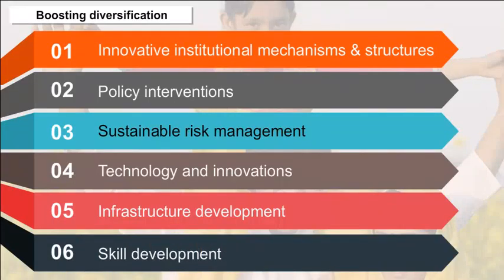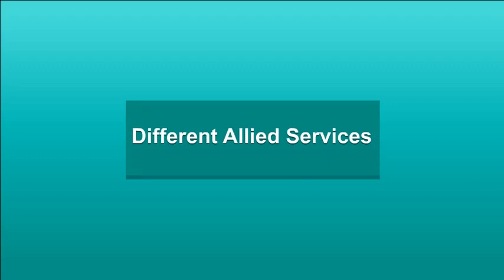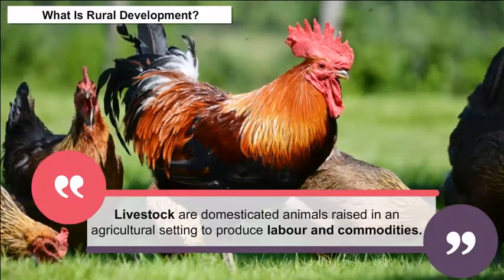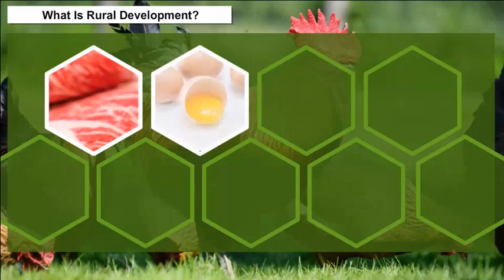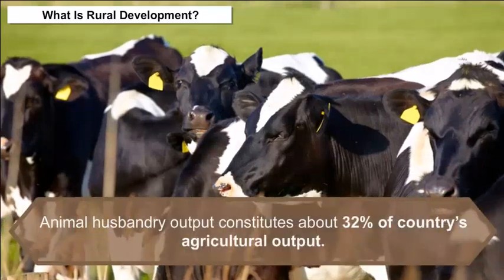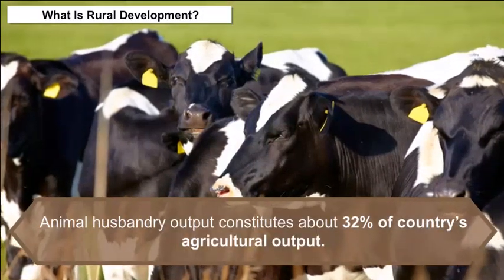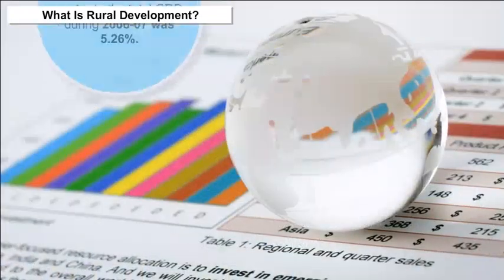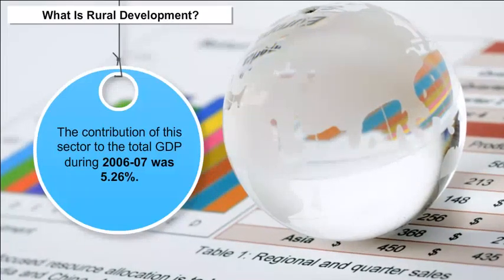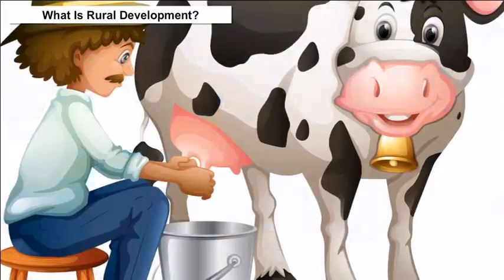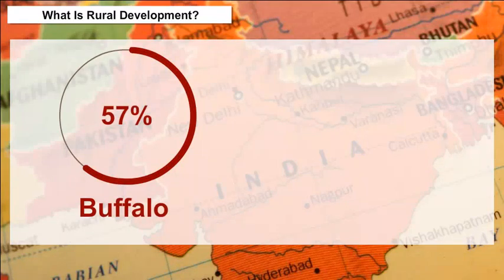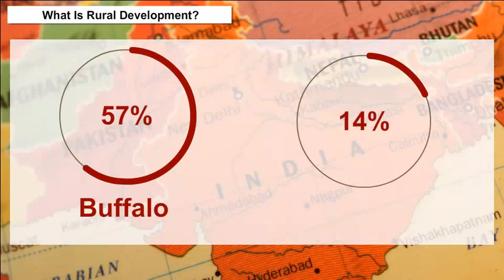Livestock are domesticated animals raised in an agricultural setting to produce labour and commodities such as meat, eggs, milk, fur, leather and wool. Animal husbandry output constitutes about 32% of the country's agricultural output. The contribution of this sector to the total GDP during 2006-2007 was 5.26%. India is the highest producer of milk, accounting for 57% of the world's buffalo population and 14% of cattle population.